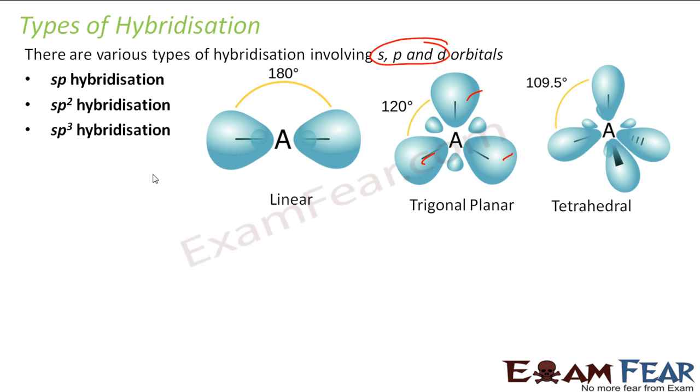Then we have sp3. So we have 4 orbitals here: 1s and 3p. So you get 4 hybrid orbitals, and it's tetrahedral shape.